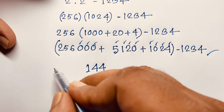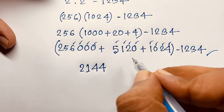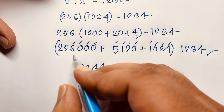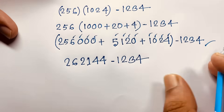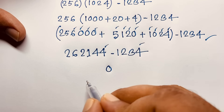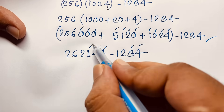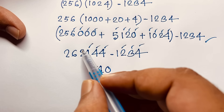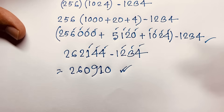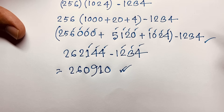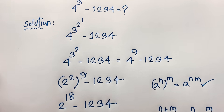Then 1 plus 6 is 6, 5 plus 1 is 6, and 6 plus 6 is 12, carry 2. Then 5 plus 5 plus 1 is 6, giving us 262144. And this minus 1234: 4 minus 4 is 0, 4 minus 3 is 1, then 11 minus 2 is 9, and 1 minus 1 is 0. So our final answer is 260910. We have solved this question without a calculator. Thank you all — if you enjoyed this, comment 'great question', please subscribe to my channel for other interesting videos. Goodbye, take care.